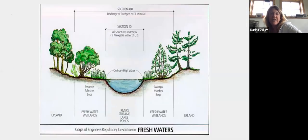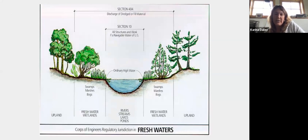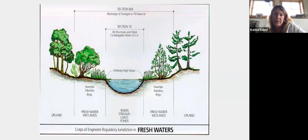Here's a diagram showing Army Corps jurisdiction over wetlands and waters. You can see the Section 10 water — rivers, streams, and lakes — jurisdiction, and beyond that the freshwater wetlands connected to rivers and streams. It's a good visual to understand Section 404 discharge of dredge material jurisdiction and the Section 10 ordinary high water jurisdiction.